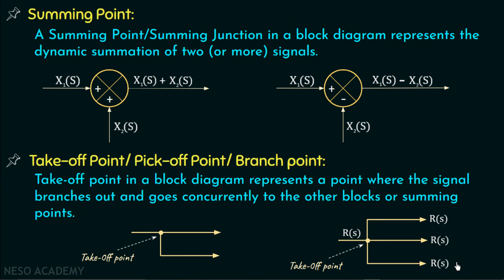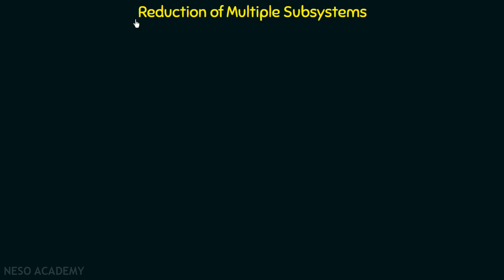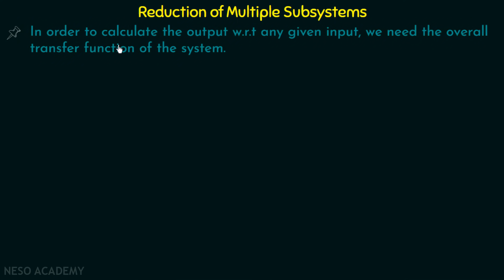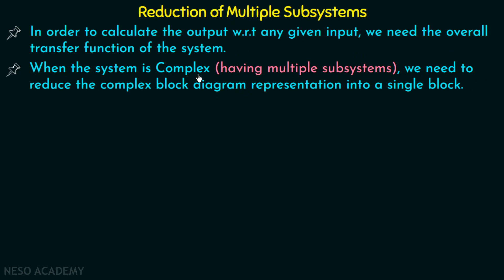We are now done with summing point and takeoff point. We will move on to reduction of multiple subsystems. As already discussed, practical control systems are complex in nature — they consist of multiple subsystems. In order to find out the overall transfer function, we need to reduce those multiple subsystems into a single block. To calculate the output with respect to any given input, we need the overall transfer function. When the system is complex, we need to reduce the complex block diagram into a single block, and only then can we determine the overall transfer function.